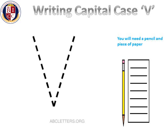You will need a pencil and a piece of paper to write on. Let's start. You start in the top left and you go down and stop, then up to the top right. Let's try that again — you start in the top left, you go down and stop, then up to the top right. See how many times you can write capital case V. Beautiful writing, well done!